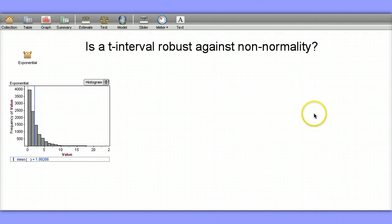Let's use Fathom to help us answer this question: Is a t-interval robust against non-normality? Here I have a distribution that is clearly skewed to the right. Its mean is 1.99266 and there are 10,000 values in this distribution.